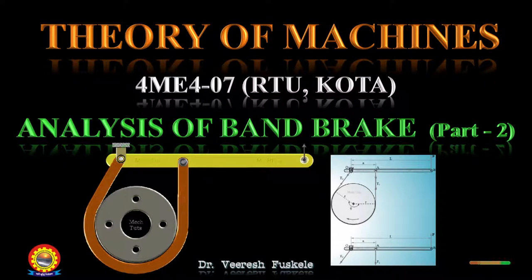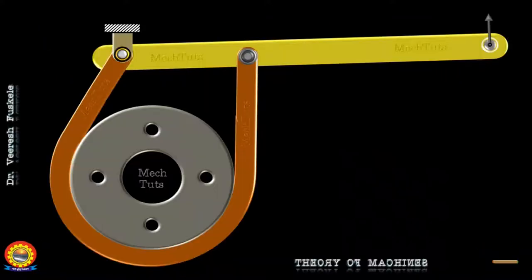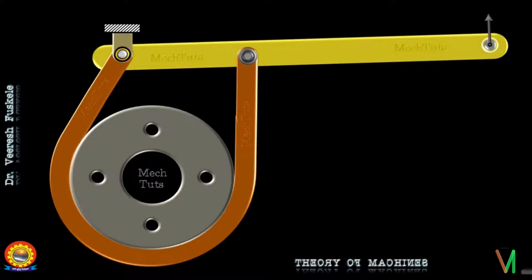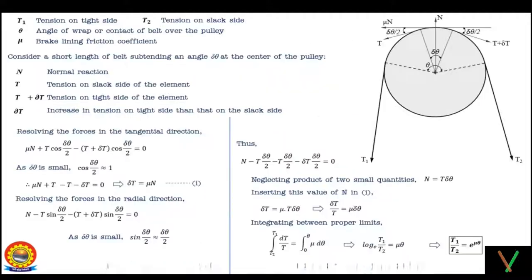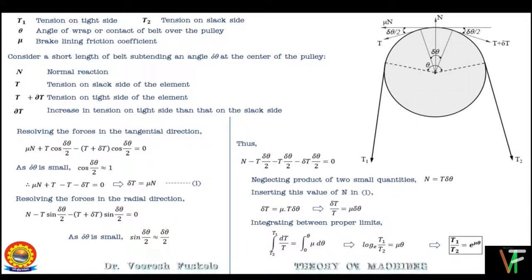Hello students, welcome to today's class on Theory of Machines. In the last class we started the discussion on band brakes — we saw its construction details and working, and learned about the forces and tensions involved. We then revised the concepts of tensions through belt and pulley, and further derived the equation of ratio of tensions which we will use in the analysis of band brakes today.